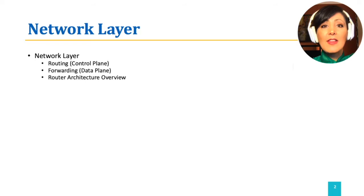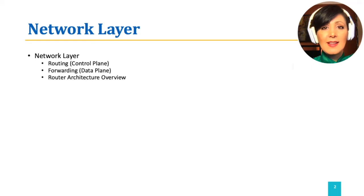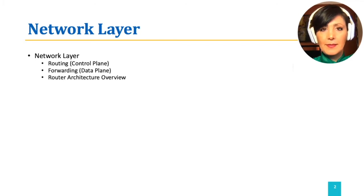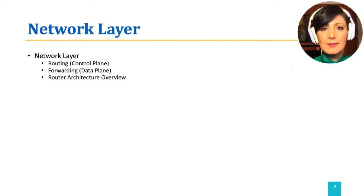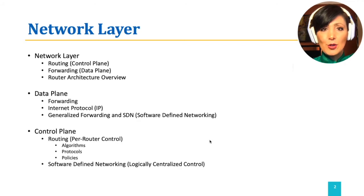We will see that these functions are provided through two main interacting parts: routing performed at the control plane, and forwarding at the data plane. We will then discuss the architecture of a router, which is the device used for processing network datagrams at the core of the network, and see what each of these parts perform at the device level.